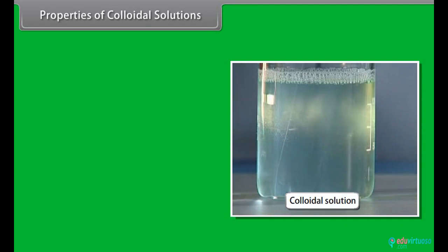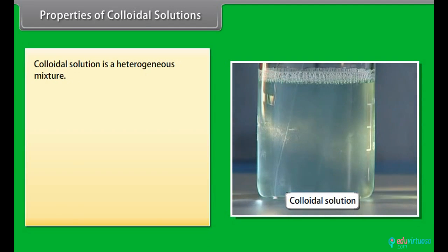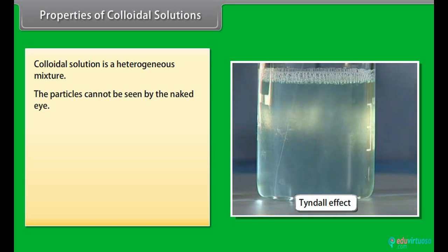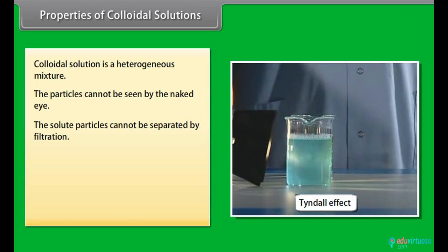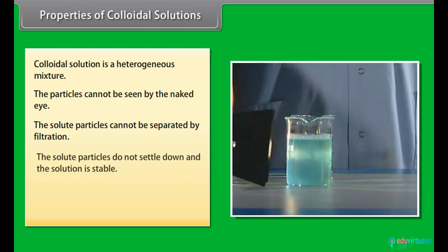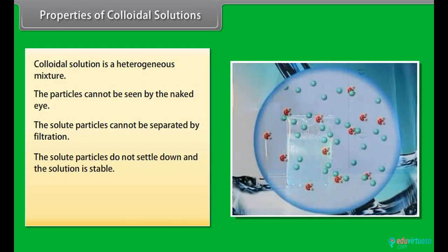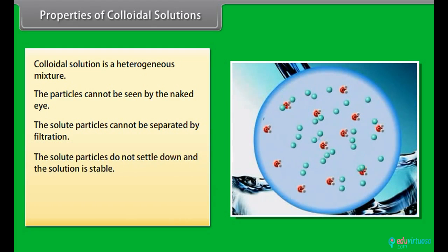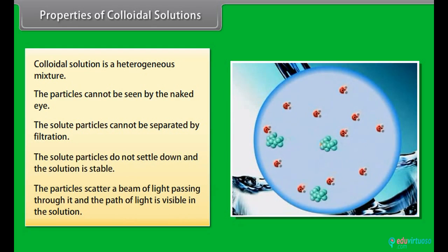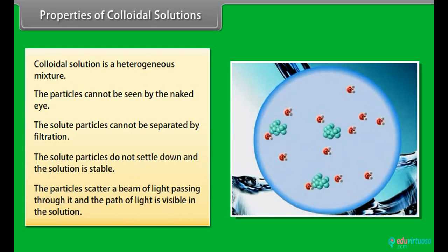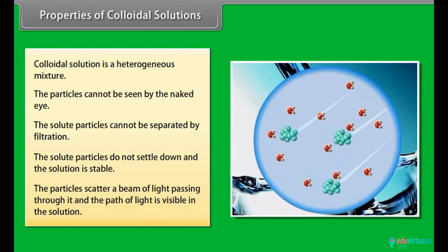Properties of colloidal solutions: A colloidal solution is a heterogeneous mixture. The particles cannot be seen by the naked eye and the solute particles cannot be separated by filtration. The solute particles do not settle down and the solution is stable. The particles scatter a beam of light passing through it, and the path of light is visible in the solution.